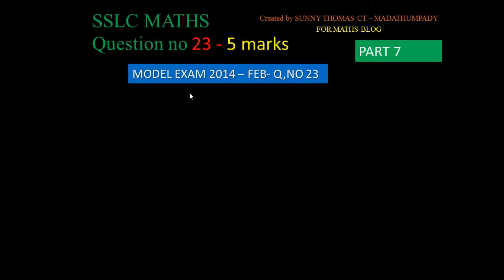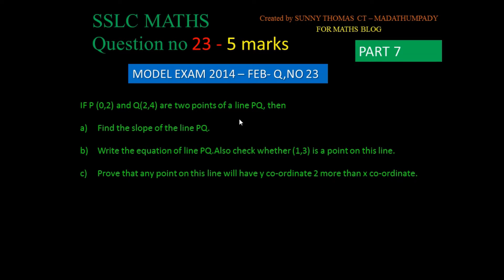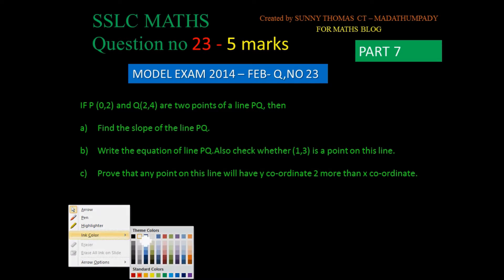I will tell you what I have done in the model exam. If P(0,2) and Q(2,4) are two points of a line: question (a), find the slope of the line PQ; question (b), write the equation of the line PQ, also check whether (1,3) is a point on this line; question (c), prove that any point on this line will have y-coordinate 2 more than x-coordinate. It is very simple.